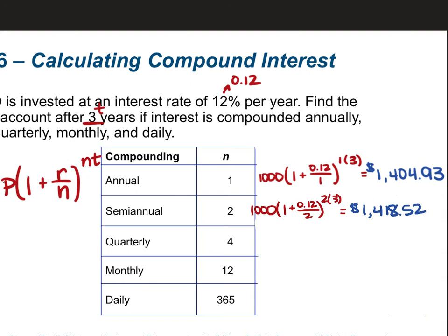For quarterly, we're just changing N to 4. So we have 1,000 times 1 plus 0.12 divided by 4 raised to the power of 4 times 3. In our calculator, 1,000 times 1 plus 0.12 divided by 4 to the power of 12 gives us $1,425.76.